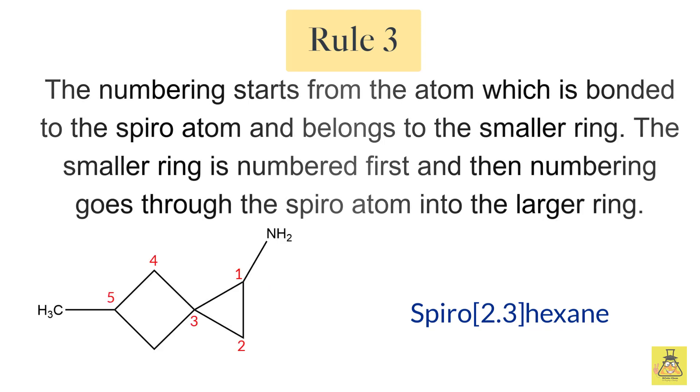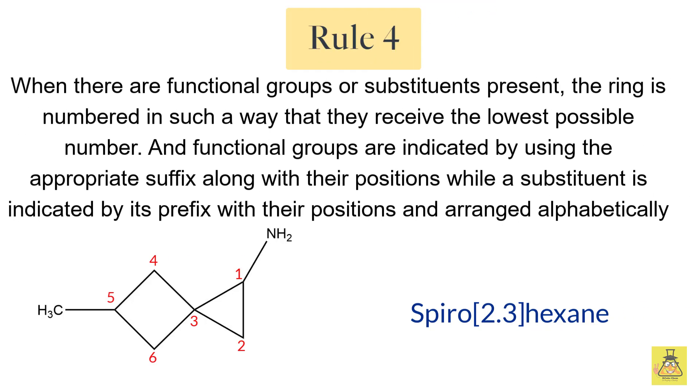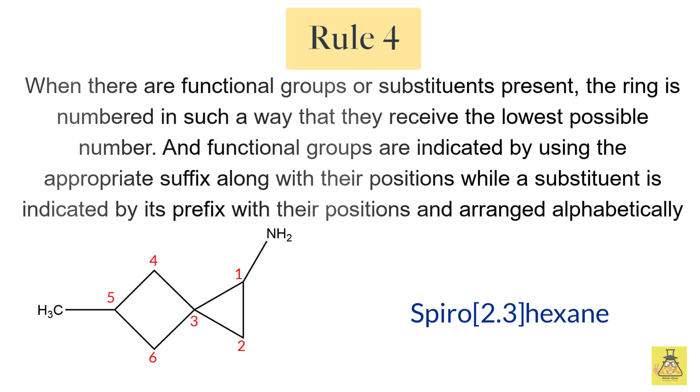We see that both parts give the methyl subsequent carbon number five, so you can do it either way. Now let's look at rule number four. When there are functional groups or substituents present, the ring is numbered in such a way that they receive the lowest possible number. As we know, the functional groups are indicated by using the suffixes while the substituents are indicated by their prefixes. You also have to mention their positions, and if there are more than two substituents, you have to arrange them alphabetically.